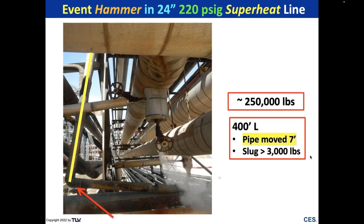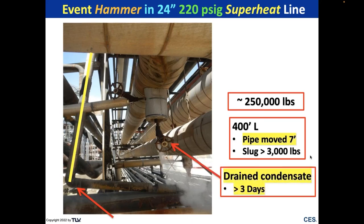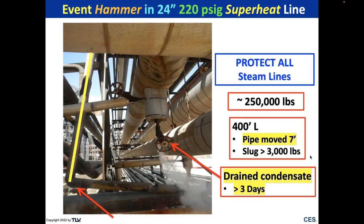They thought it was superheated and had no condensate, but when they opened various drain valves, it drained condensate for three days. When you've got superheated steam, the high-temperature steam moves over the water, and if the water doesn't have a drain point — it's like the sun trying to evaporate all the water in a lake; it won't get it all. It's not a boiler; it's high-temperature steam moving over water flow. We have to protect all steam lines, including superheated steam lines.